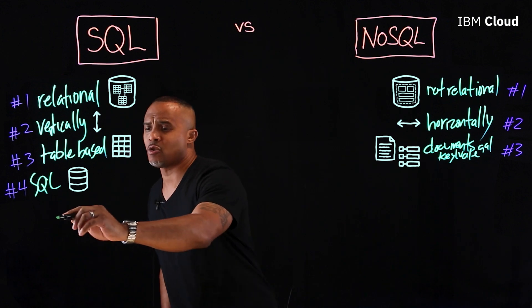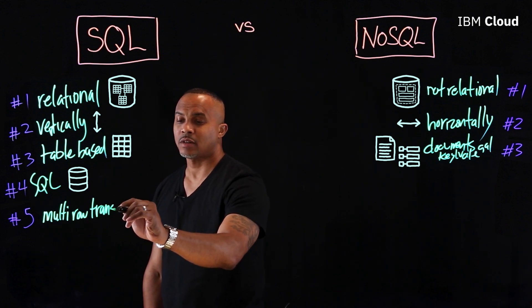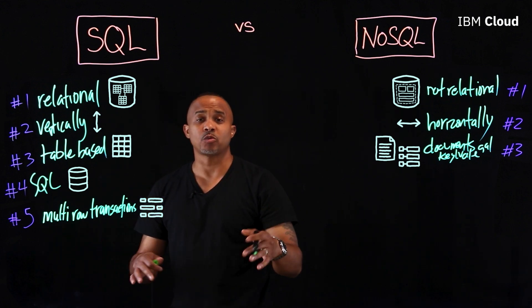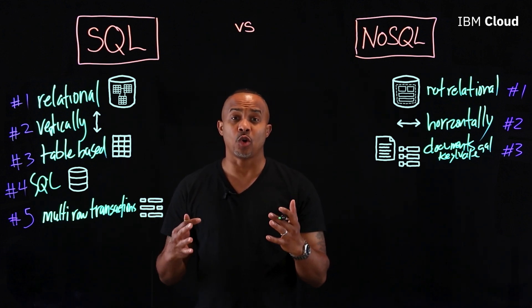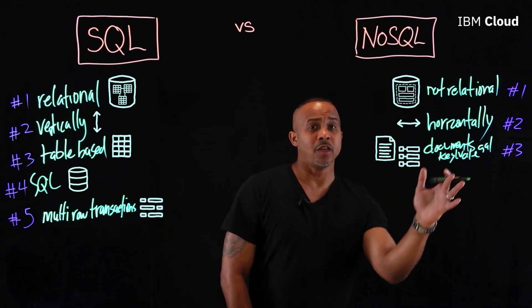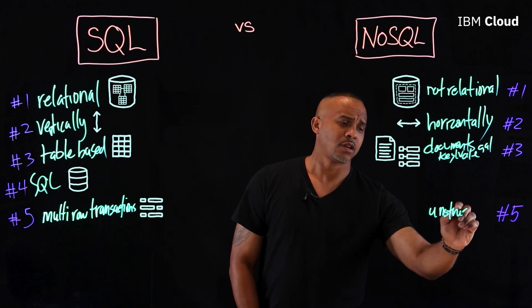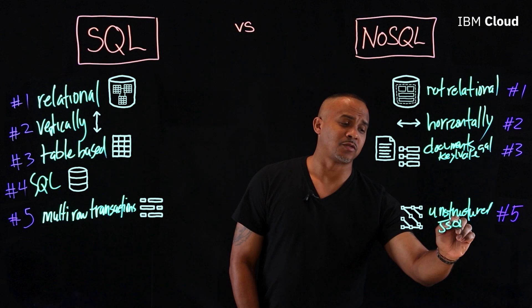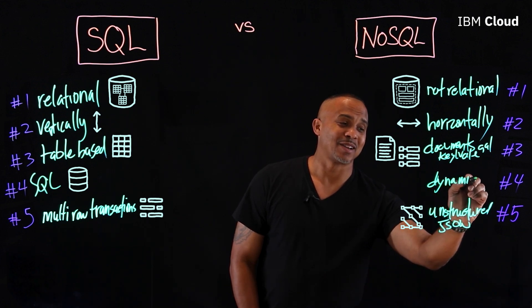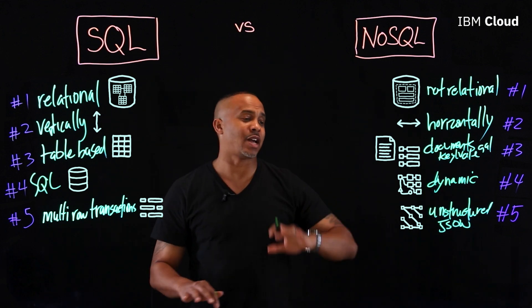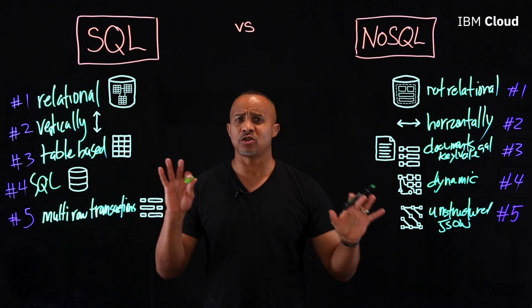Lastly, SQL is great for multi-row transactions. You have your tables, a lot of data you want to put in, and the ability to do transactions with rollback support so you can really control what goes in. On the other side, NoSQL is unstructured — usually JSON. It's very great for working with JSON and is much more dynamic. So the contrast is really unstructured JSON versus something that is very planned out and specifically structured.